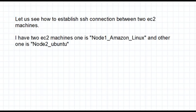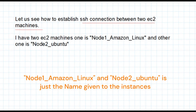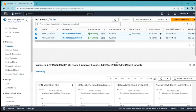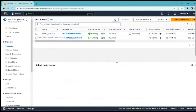Let us see how to establish an SSH connection between two EC2 machines. I have taken two EC2 machines — one is Node 1 running Amazon Linux and the other is Node 2 running Ubuntu. You can see here that both instances are running now.